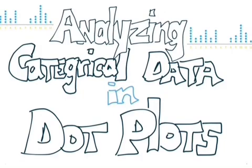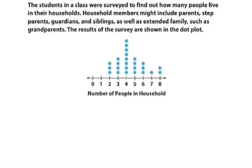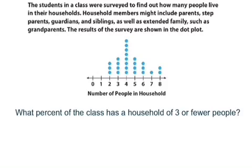Analyzing categorical data in dot plots. Let's check out this word problem, really the situation that leads to a word problem. The students in a class were surveyed to find out how many people live in their households. Household members might include parents, step parents, guardians, and siblings, as well as extended families such as grandparents. The results of the survey are shown in the dot plot, and it says number of people in households. They want to know what percent of the class has a household of three or fewer people.